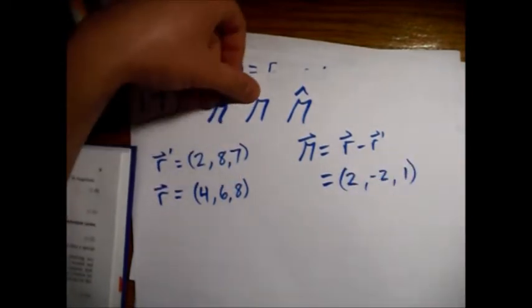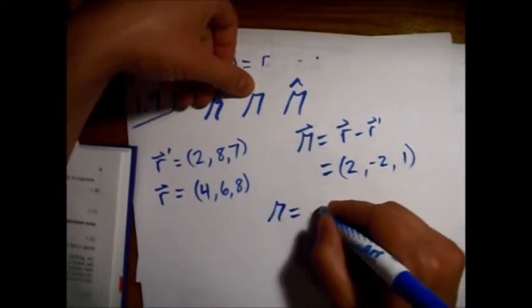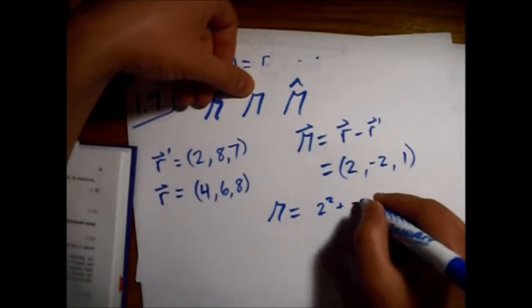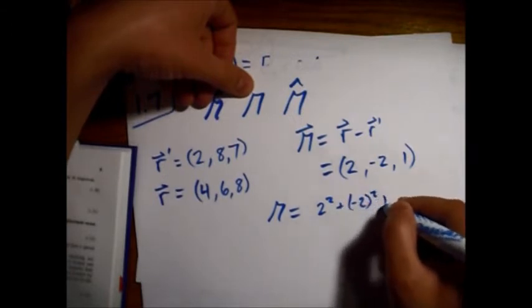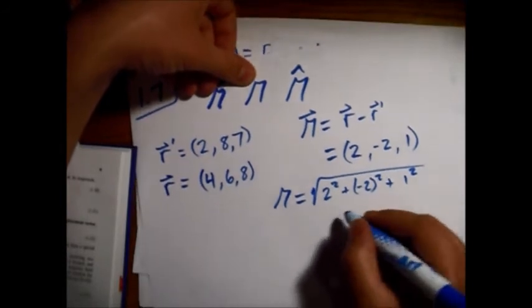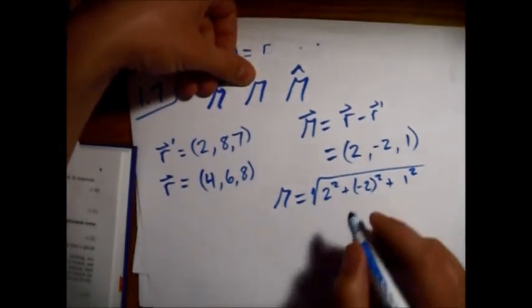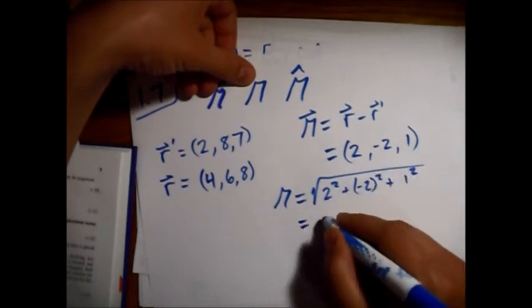Alright, now we need to find its magnitude, equals 2 squared plus minus 2 squared plus 1 squared, all under square root. So 4 plus 4 is 8, plus 1 is 9, and square root of 9 is 3.